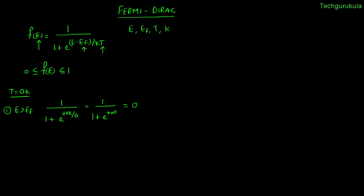This tells us that the probability of finding electrons above the Fermi energy level is 0 at T = 0 Kelvin. For the second case where E < EF, the numerator E − EF is negative, so with T = 0 we get 1 / (1 + e^(−∞)), which equals 1. So below the Fermi energy level, the probability of finding an electron is 1.